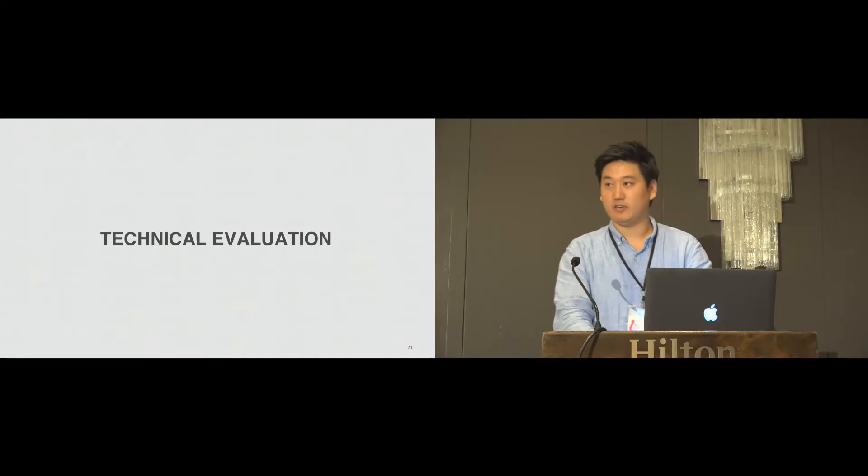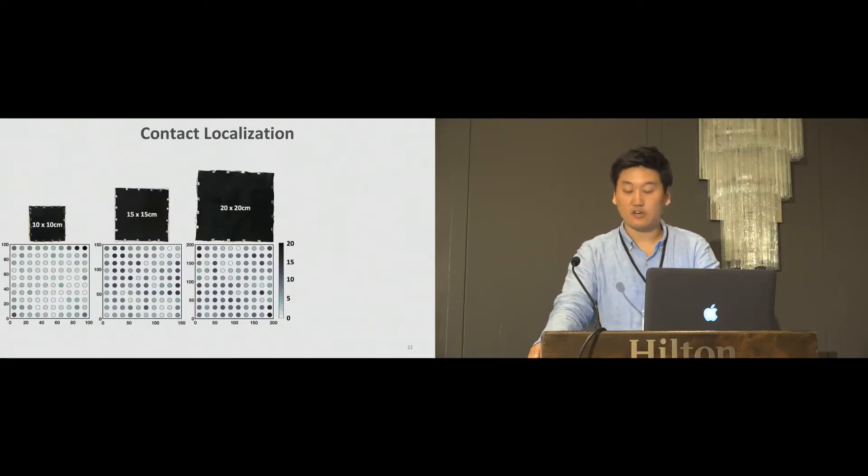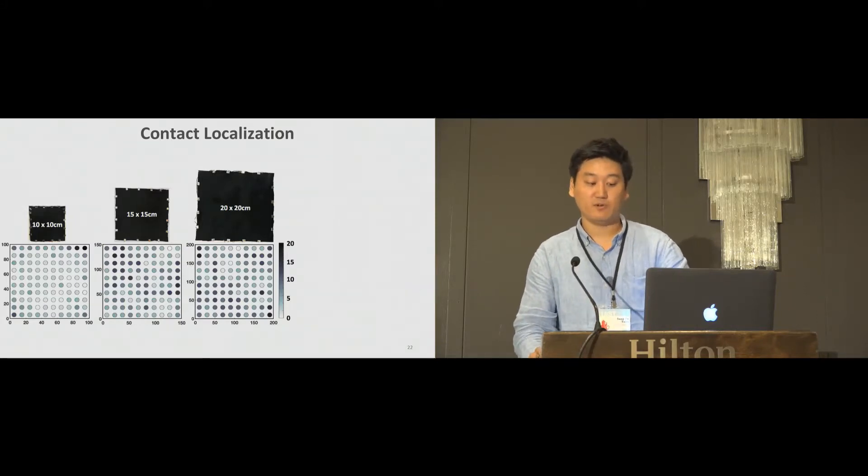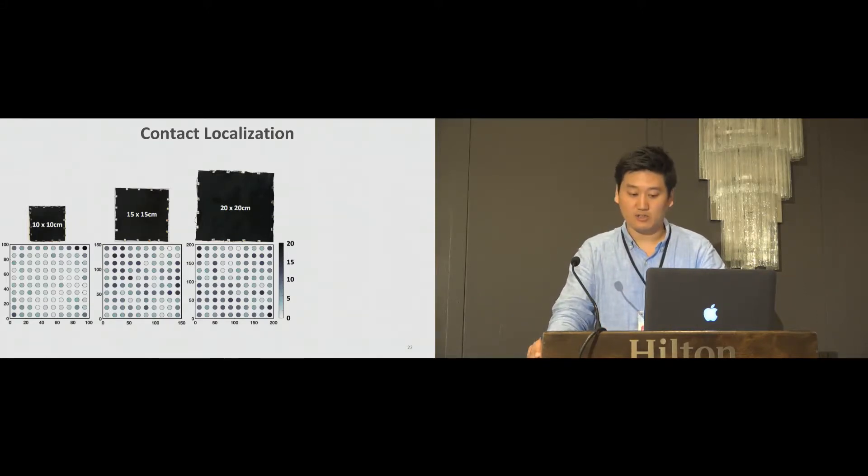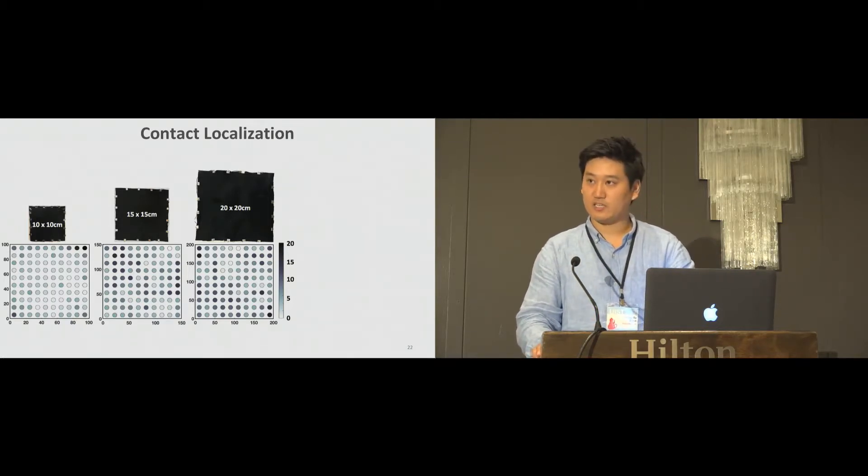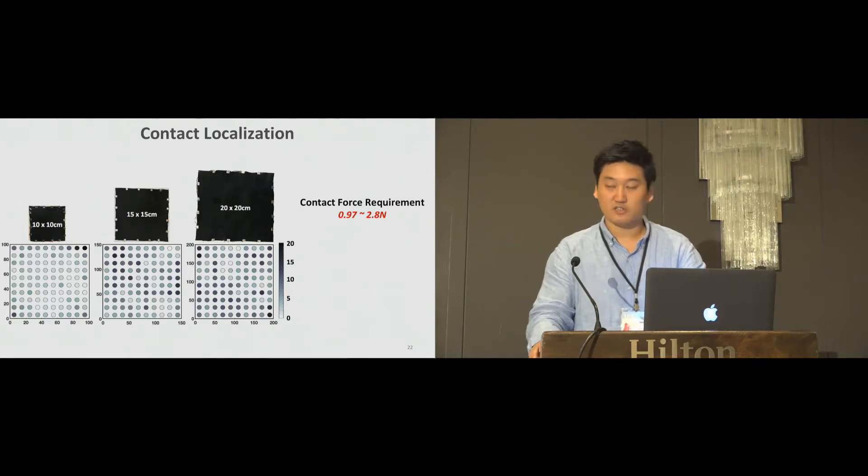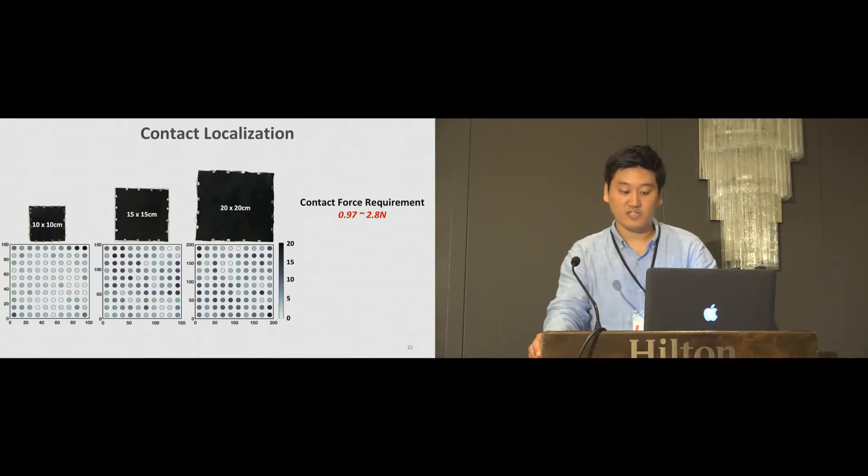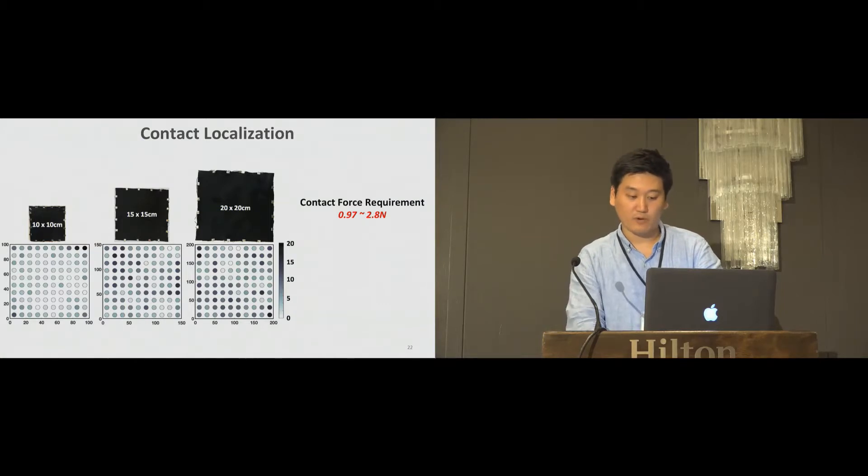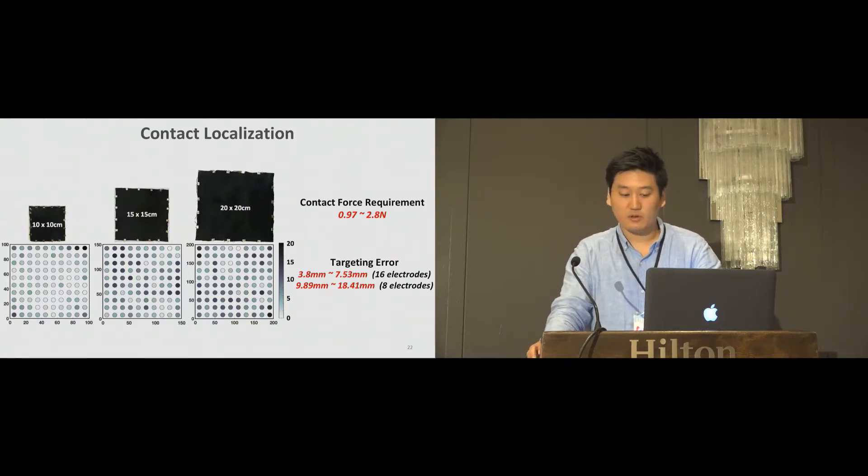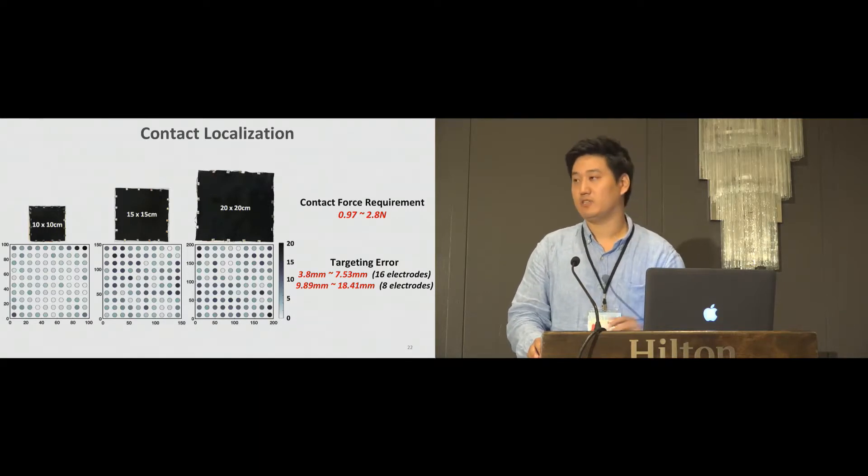Here we summarize the technical evaluation. We tested the contact localization accuracy in different sensor sizes and number of electrodes. The sensor thickness was 0.8 millimeters. First, we tested the activation force requirement. Since we are based on resistive reading, this requires some force to activate the sensors. We tested it on all sensor regions and the range of contact force requirements was found to be 0.1 to 3 newton force. We found this is the comfortable fingertip pressure range according to previous papers. For targeting error, it came out to be around 4 to 7.5 millimeters for 16 electrodes and 10 to 18 millimeters for 8 electrodes. One thing we noticed is there is an improvement of 10 to 30 percent in errors if we are only focusing on the 80 percent of the center area.